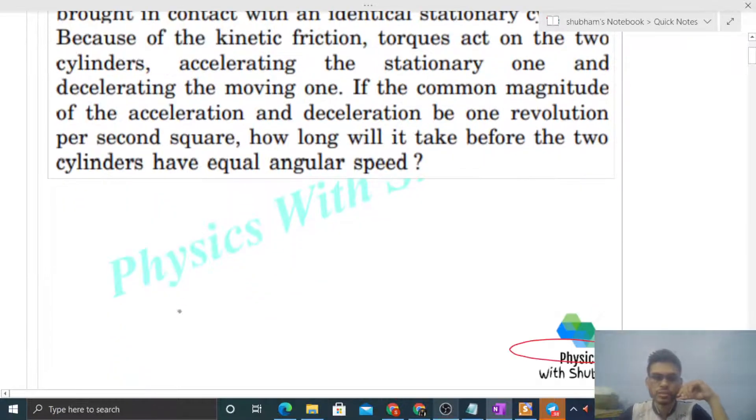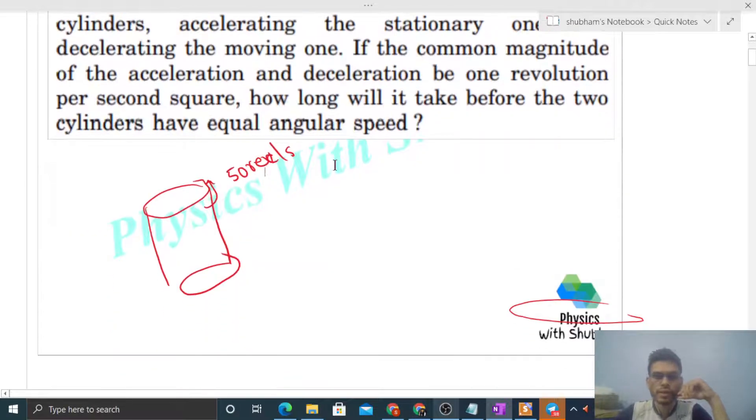So initially, the angular velocity of this cylinder is given as 50 revolutions per second. Now when we bring a stationary identical cylinder in contact, torque will act because of friction. The friction force torque will decelerate the first cylinder which has omega of 50 revolutions per second. Its deceleration will be, so you can write it as minus one revolution per second square. This is the alpha.